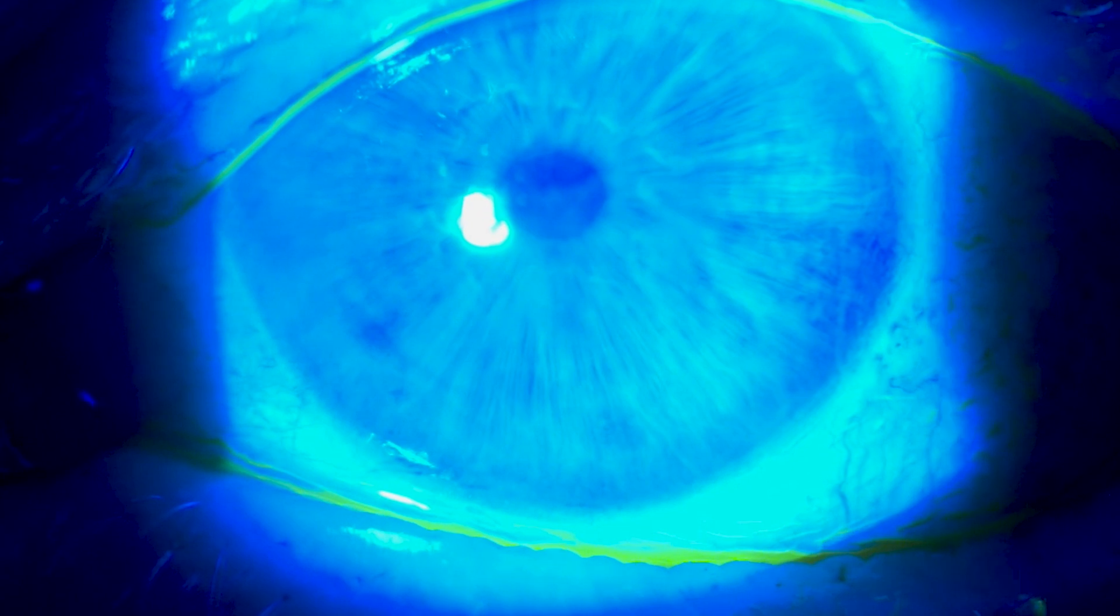When I switch over the cobalt blue filter, it'll highlight cells with that fluorescein on the cornea.